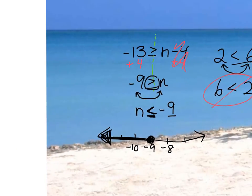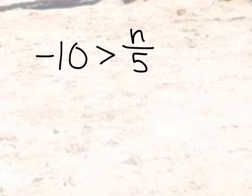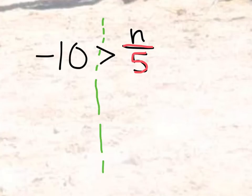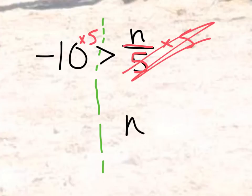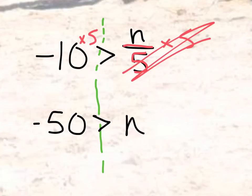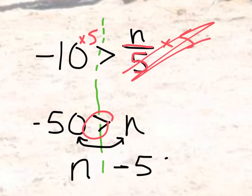Let's try one more example — question 12, which says negative 10 is greater than n over 5. Just like an equation, we need to get rid of the divided by 5 to get n by itself, and the opposite of that is to multiply by 5. So I'm going to multiply both sides by 5 — that cancels out, leaving us with n. We've got a greater than symbol, and negative 10 times 5 is negative 50. Once again the variable is on the right side, so I'm going to switch them around and reverse the direction of the inequality: n is now on the left side, negative 50 on the right, and the symbol becomes less than.